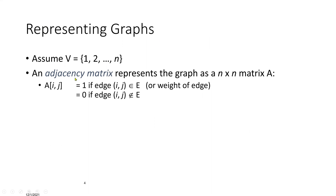When representing graphs, we assume we have vertices numbered from 1 up to n vertices. An adjacency matrix will represent the graph as an n by n matrix. So if we have a graph with 10 vertices, the size of the adjacency matrix will be 10 by 10. If the vertices are 5 or 6, it will be either 5 by 5 or 6 by 6. The size of the matrix depends on the number of vertices we have in the graph.